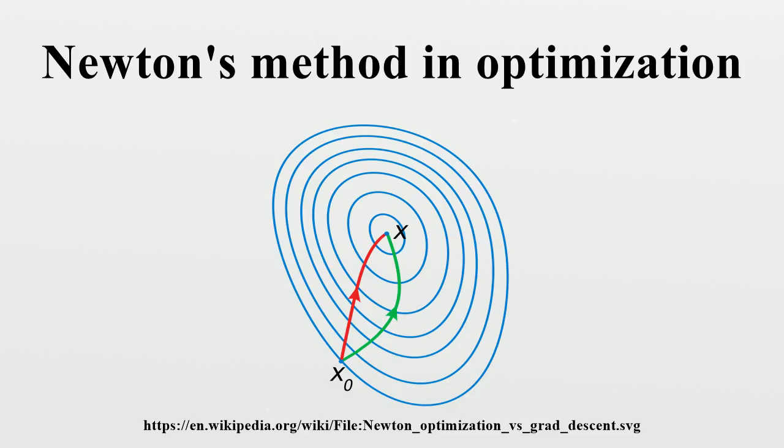While this may seem like a limitation, it's often a useful indicator of something gone wrong. For example, if a minimization problem is being approached and H_f is not positive definite, then the iterations are converging to a saddle point and not a minimum. On the other hand, if a constrained optimization is done, the problem may become one of saddle point finding.